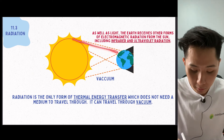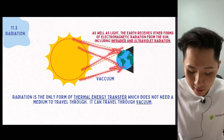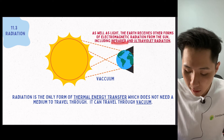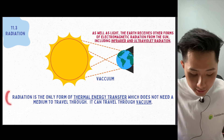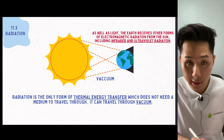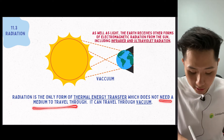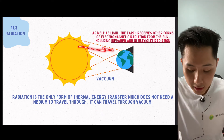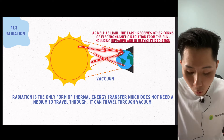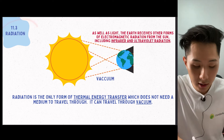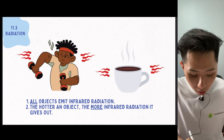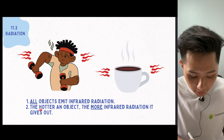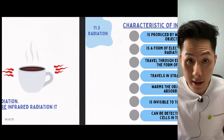There's another way heat can be transferred. Think about the sun — how does the heat from the sun reach us? It's via infrared and ultraviolet radiation. Radiation is the form of thermal energy transfer which does not need a medium to travel through — it can travel through vacuum. The heat from the sun travels all the way through the vacuum of space to Earth via radiation. All objects actually emit radiation, whether it's a person or hot coffee. The hotter an object, the more infrared radiation it gives out.